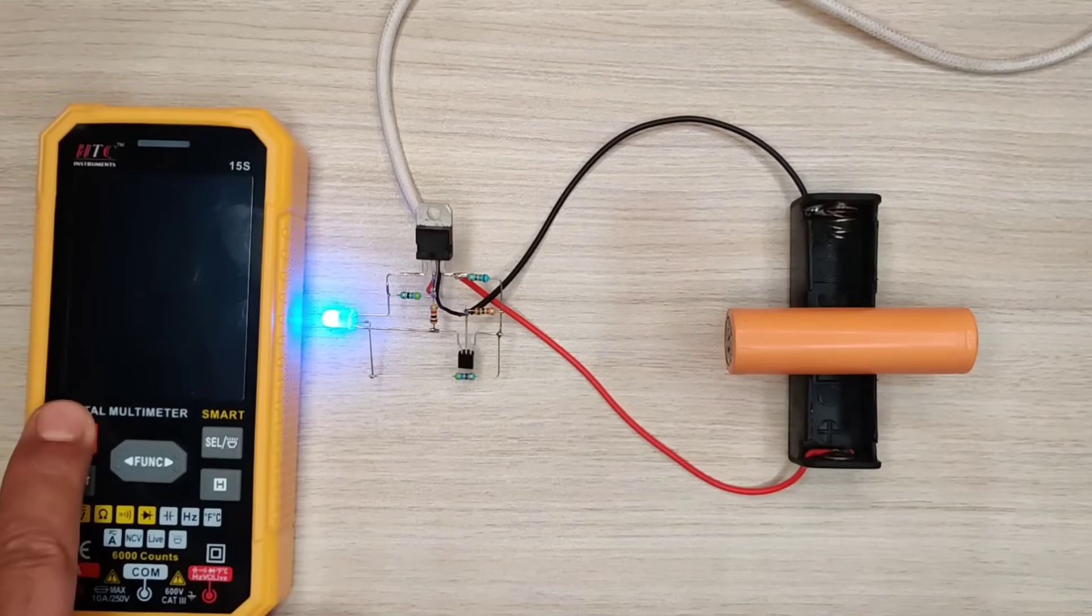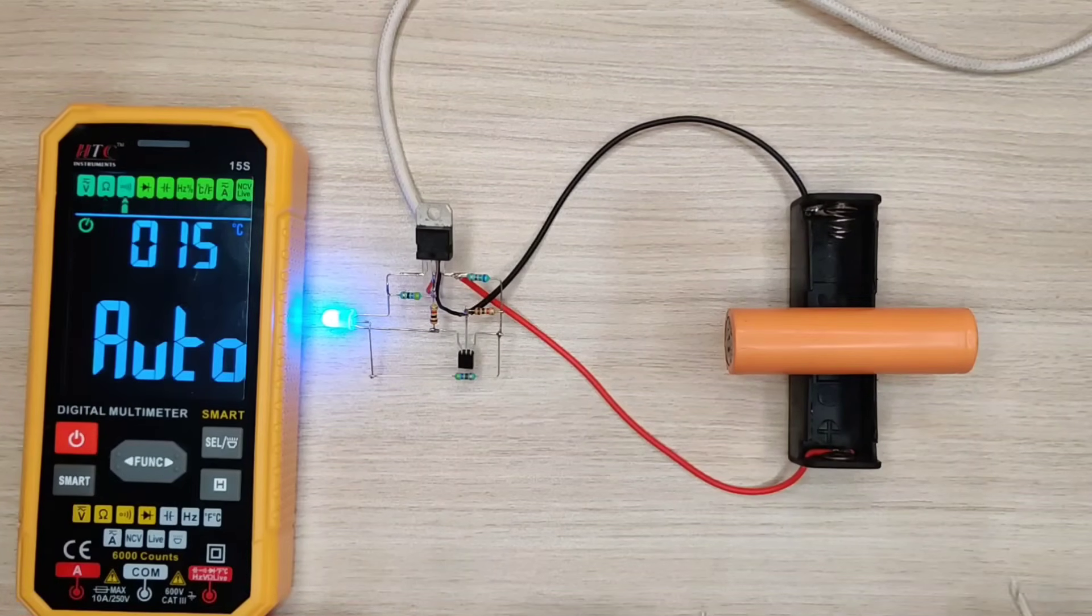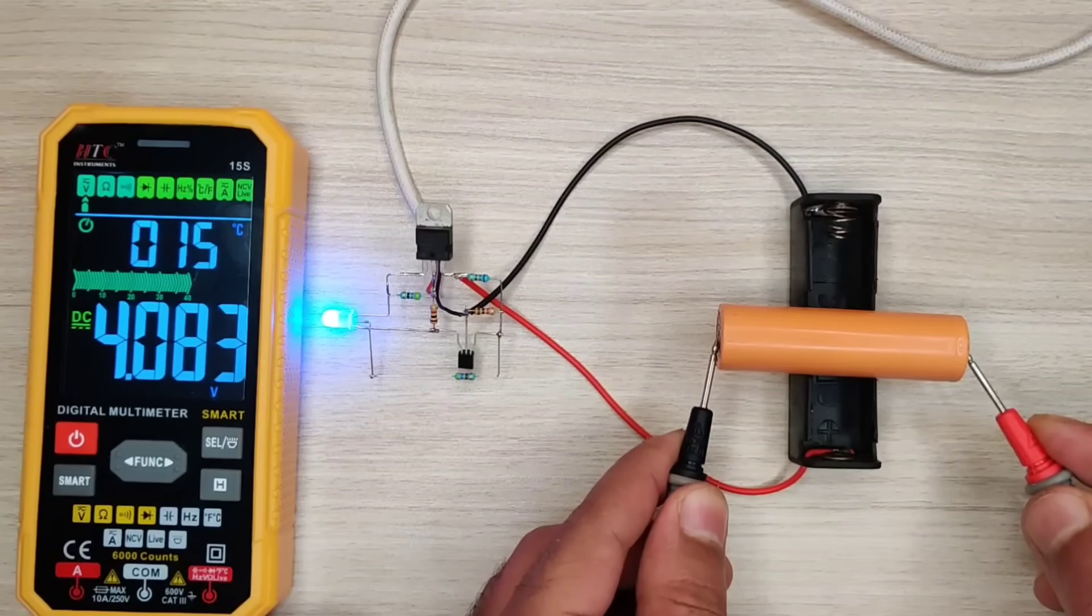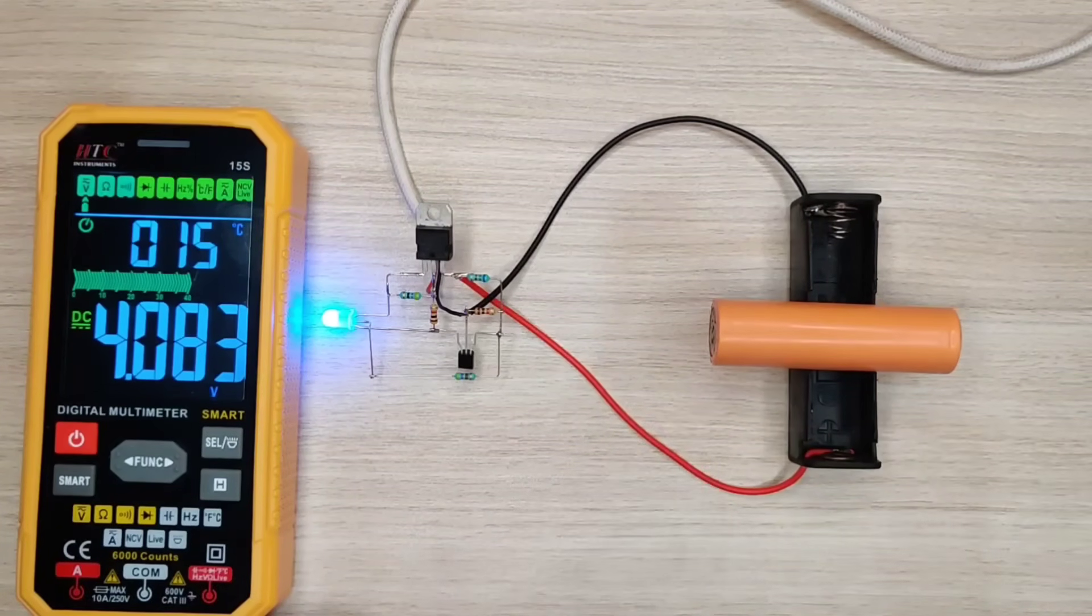Now let's check with multimeter. As you can see battery reads about 4.1 volt, since it is old battery and it is fully charged.